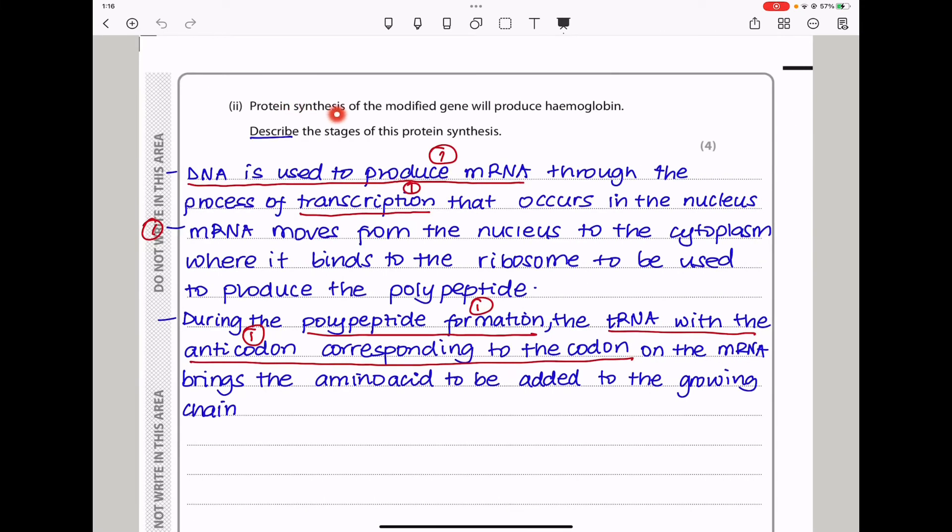Moving on. Protein synthesis of the modified gene will produce hemoglobin. Describe the stages of this protein synthesis. Protein synthesis contains transcription as well as translation. Transcription takes place in the nucleus as DNA is used to produce messenger RNA. The produced messenger RNA then leaves the nucleus through the nuclear pore into the cytoplasm where it binds onto the ribosome in order for translation to occur. During the polypeptide formation, the transfer RNA with the anticodon corresponding to the codon on the messenger RNA brings the amino acid to be added to the growing polypeptide chain.